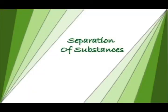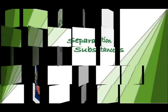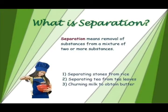Hello everyone, today I am starting our new chapter — Chapter Number Five: Separation of Substances. In this chapter, we will discuss what is separation, why do we separate substances, and various types of methods of separation. Separation means removal of a substance from a mixture of two or more substances. The process of doing so is known as separation.